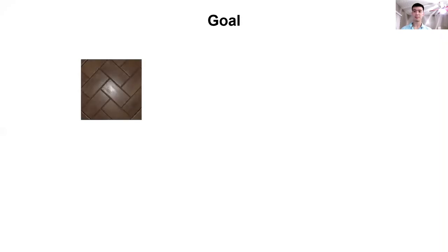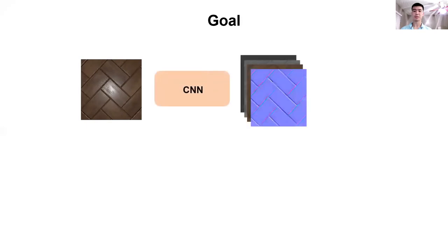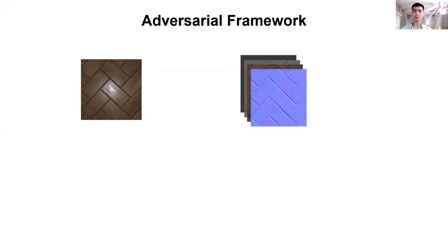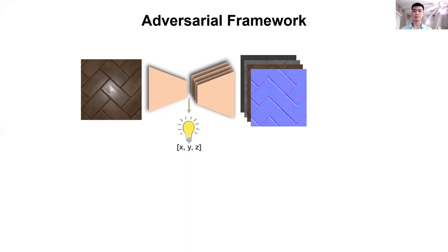Let me reiterate our goal. Given a flash image of a planar surface, we wish to use a convolutional neural network to estimate the SVBRDF parameters: normal, diffuse, roughness, and specular. In our system, we use a single encoder to encode the input image into a set of features. We then pass the encoded features into four decoders to generate our SVBRDF parameters. Additionally, we use a couple of fully connected layers to estimate the input light position from the encoded features, which will be useful for training our system on real images.